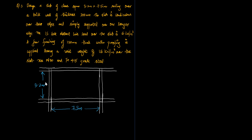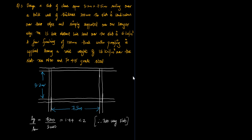It's continuous over here, continuous over here, continuous over here, and this is discontinuous over this portion. Taking LY by LX ratio I will get it as 1.44, which is less than 2 and it is supported on all four edges. So this is a two-way slab.